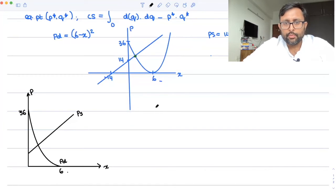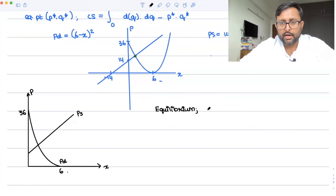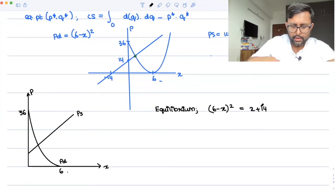And where is the equilibrium point? Where demand is equal to supply. So demand is what? 6 minus x the whole square. Supply is what? 14 plus x. Demand is what? 6 minus x the whole square. And supply is what? 14 plus x.